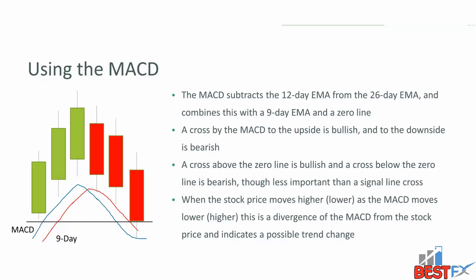A cross by the MACD above the 9-day line is bullish, and a cross by the MACD below the 9-day line is bearish. A cross above the zero line is bullish and a cross below the zero line is bearish.